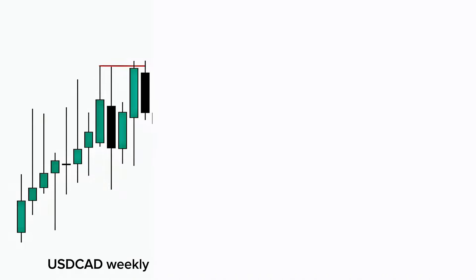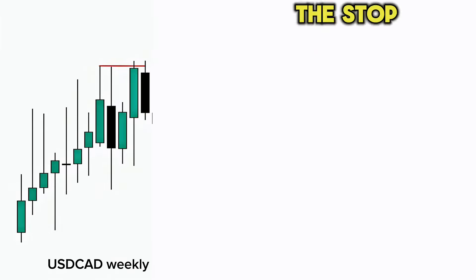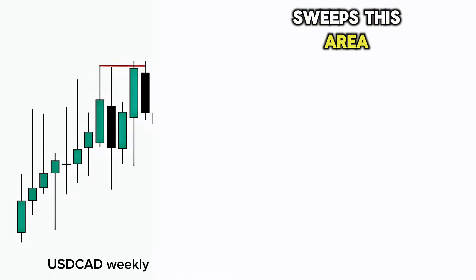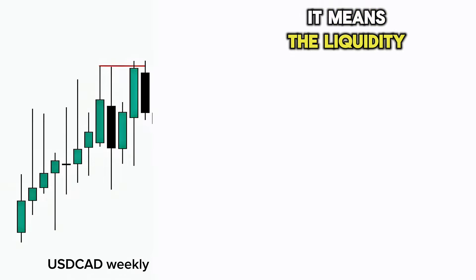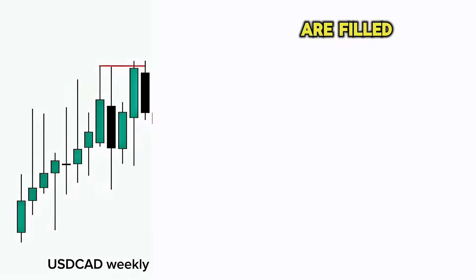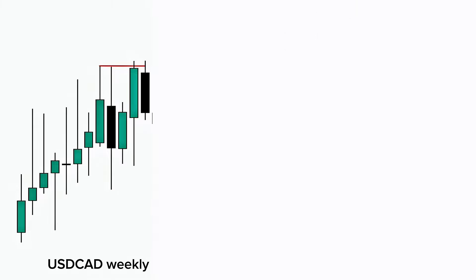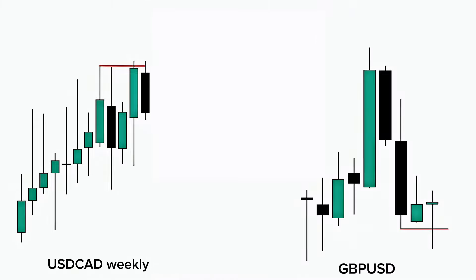I call this the liquidity sweep because swing highs and swing lows have a lot of liquidity in them — most of the time stop losses are placed at these points. When the price sweeps this area, it means stop losses are hit and liquidity is taken. When I say liquidity is taken, it means orders are filled. Without hitting the stop losses, big orders cannot get filled, so the liquidity has to be taken.